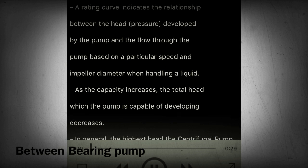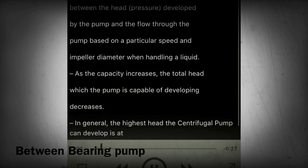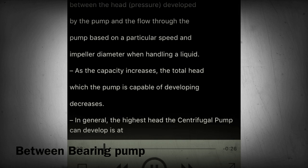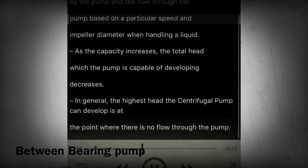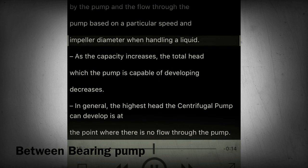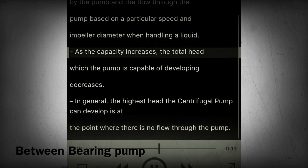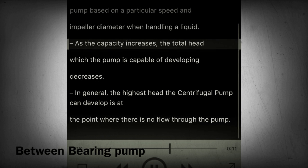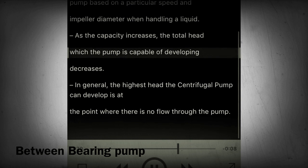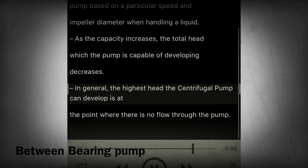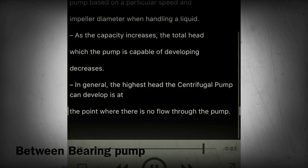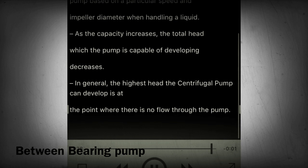Section 22 - Centrifugal pump curve characteristics: head and capacity. A rating curve indicates the relationship between the head (pressure) developed by the pump and the flow through the pump, based on a particular speed and impeller diameter when handling a liquid. As the capacity increases, the total head which the pump is capable of developing decreases. In general, the highest head a centrifugal pump can develop is at the point where there is no flow through the pump.